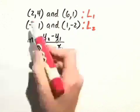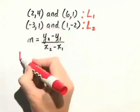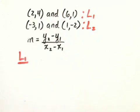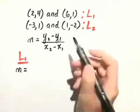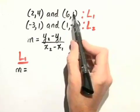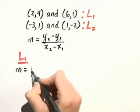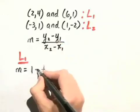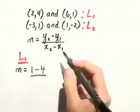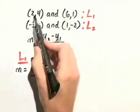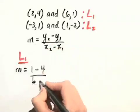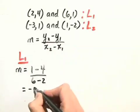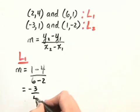So we have the first set of points for L1. We have the slope is going to be the difference of the y coordinates, so y sub 2, which is 1, minus y sub 1, which is 4, divided by x sub 2 minus x sub 1, so we have 6 minus 2. When we simplify, we get negative 3 in the numerator over 4.